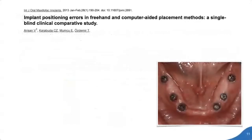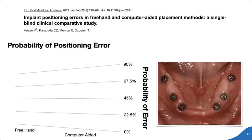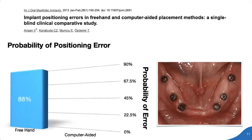Another study by Arisan et al., published in the International Journal of Oral and Maxillofacial Implants in 2013, looked at positioning errors in freehand versus computer-aided placement of 353 implants in 54 patients. They found that interproximal emergence, inter-implant distance, and parallelism errors were significantly higher with the freehand method. The highest probability of positioning error was associated with freehand placement — and it's really not even close.